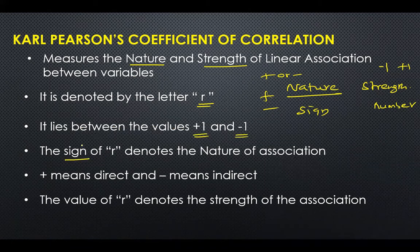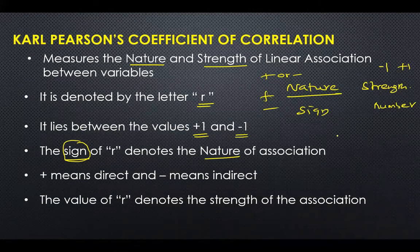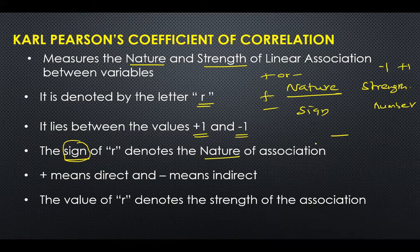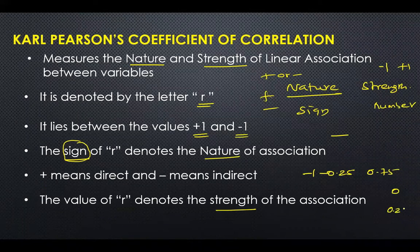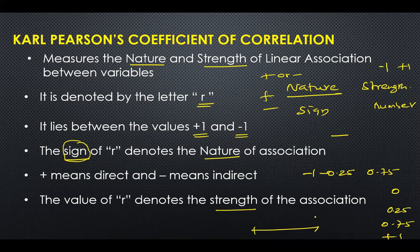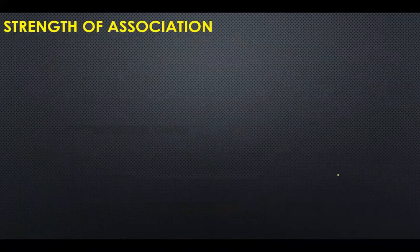The sign of r denotes the nature of the correlation. A positive sign means direct (positive) correlation, and a negative sign means indirect (negative) correlation. The value of r denotes the strength of the association.